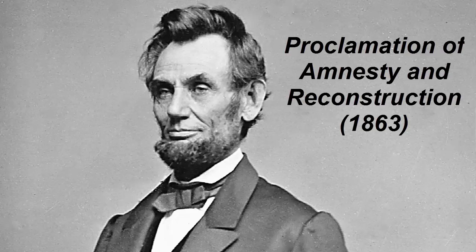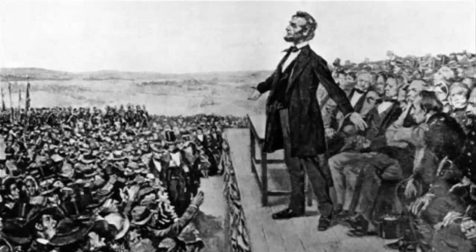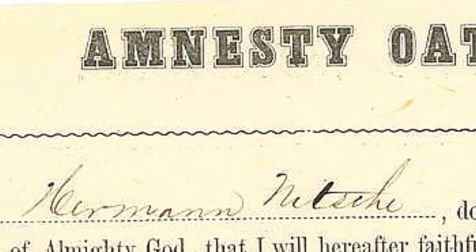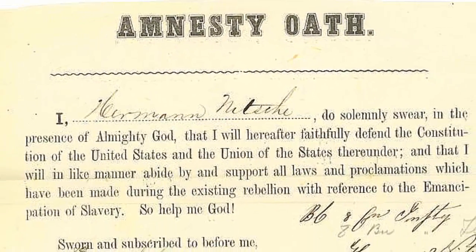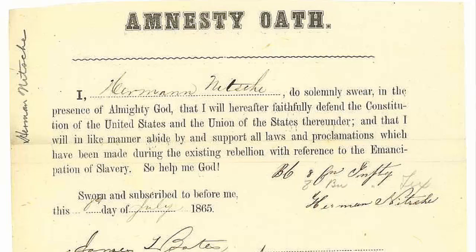Let's begin with Abraham Lincoln's plan. In December of 1863, Abraham Lincoln delivered his Proclamation of Amnesty and Reconstruction. By this time, many of the Southern states were actually under control of the Union. The first component of Lincoln's plan was to give the Confederates amnesty. The Confederates are those who fought against the United States — they were Southerners — and amnesty simply means that they're forgiven, so they won't be punished for fighting against the United States.